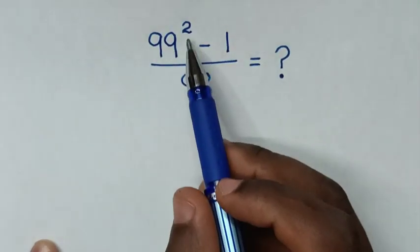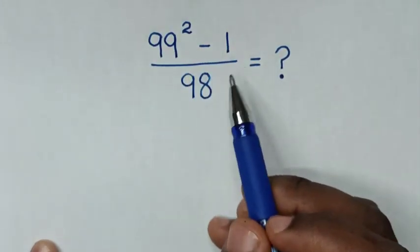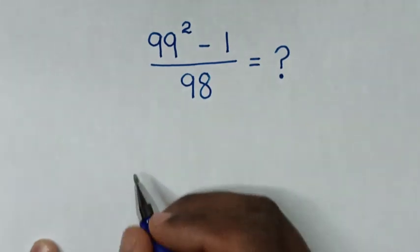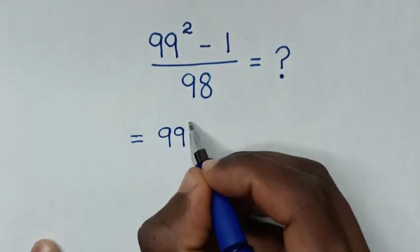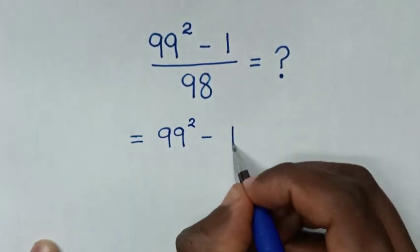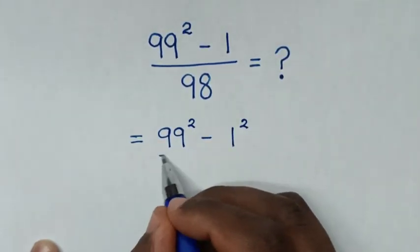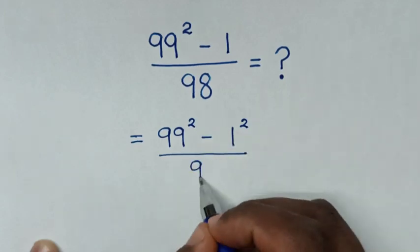Hello. We have 99 squared minus 1 over 98. This will be equal to 99 squared minus 1 squared over 98.